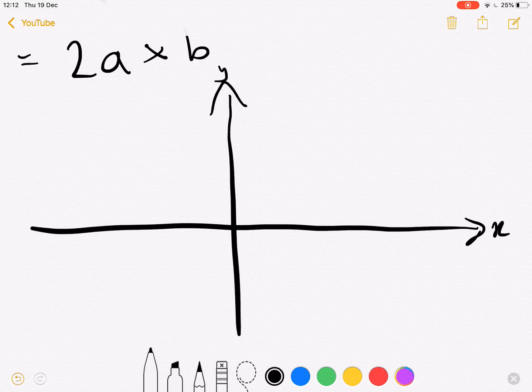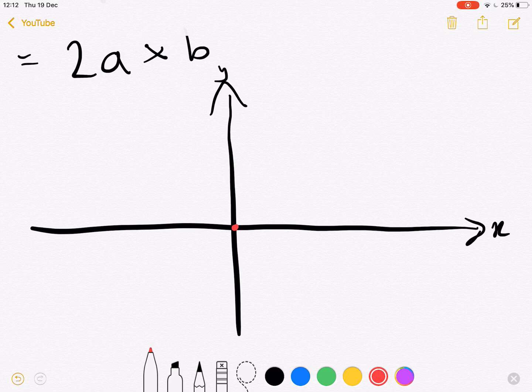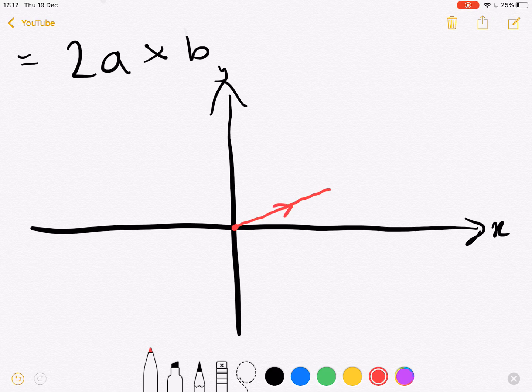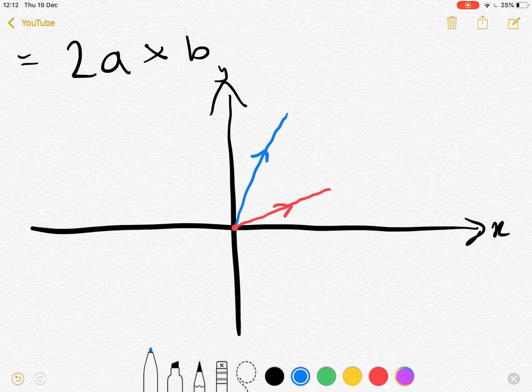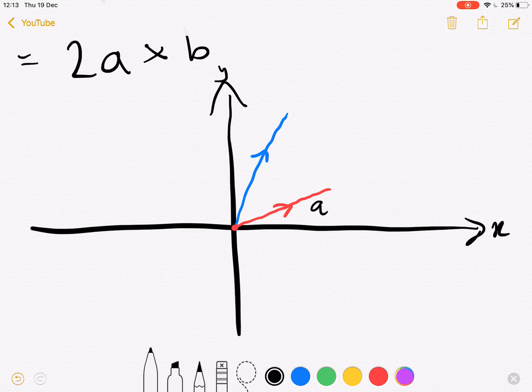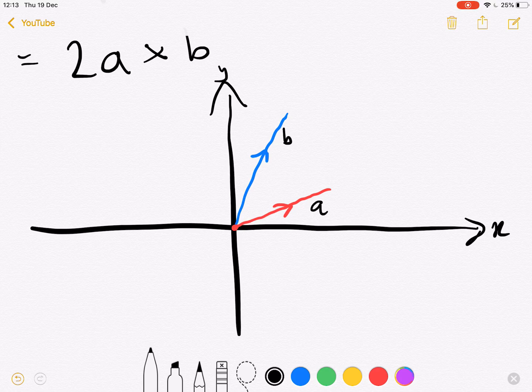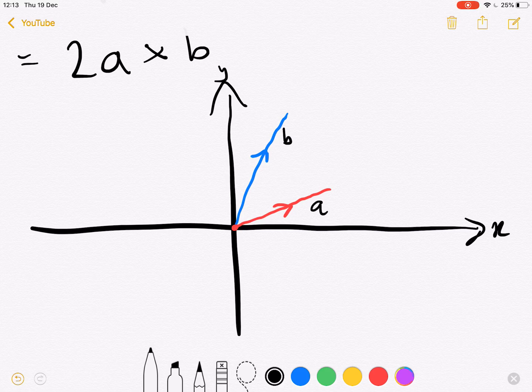If we have some arbitrary vector a, so this should be a, and then in a different color we'll have b. So we have a here and b here. And as you know, vectors have a direction and magnitude, so it doesn't go on forever, it's stuck at some point.